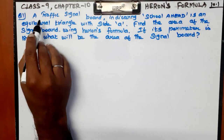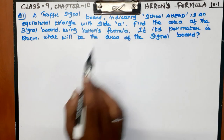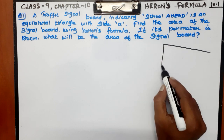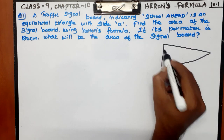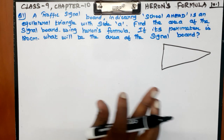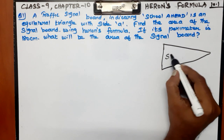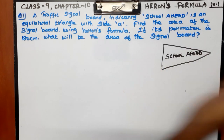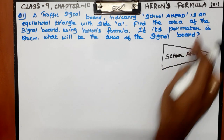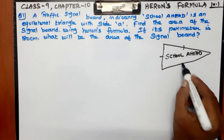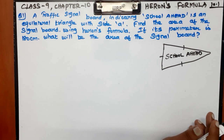So our first problem is about a traffic signal board — a school ahead sign. There is a traffic signal board. You will have a problem with a twist. The traffic signal board is an equilateral triangle.